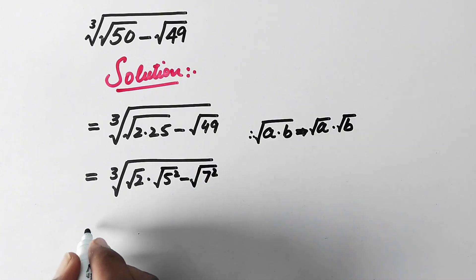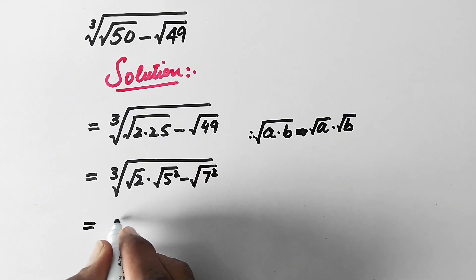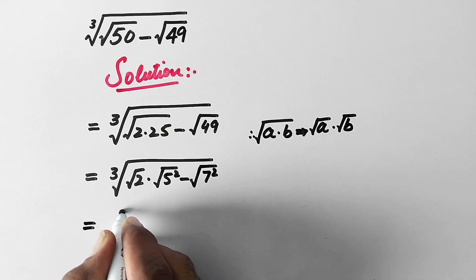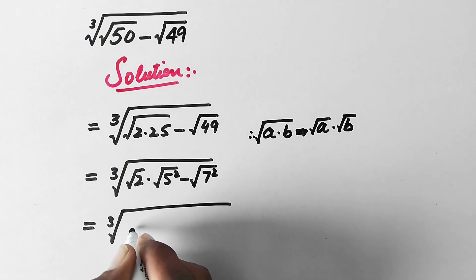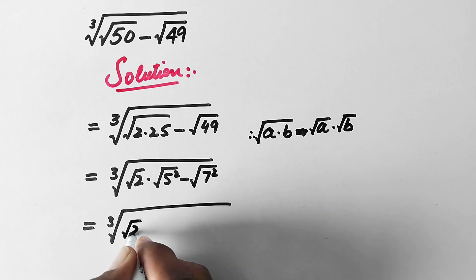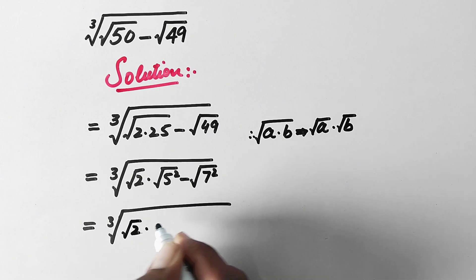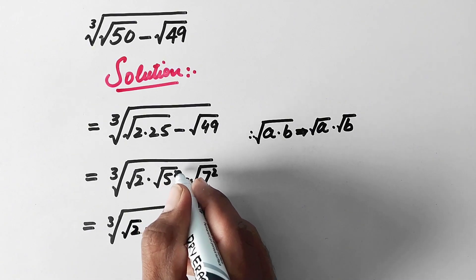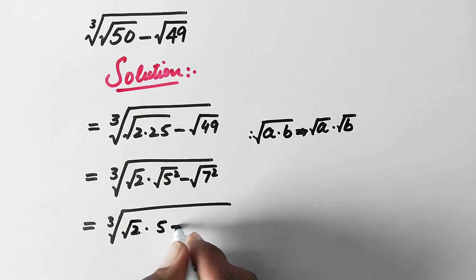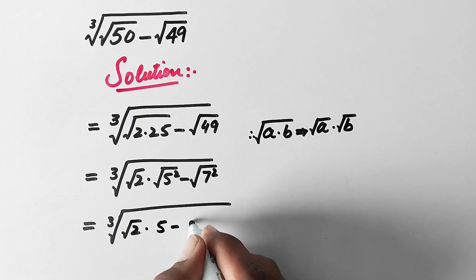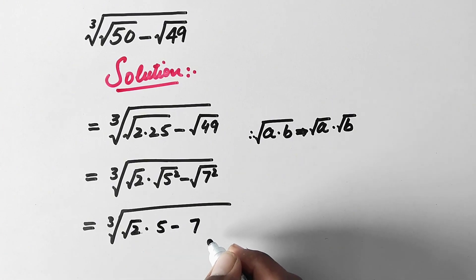So in the next step, we take the cube root of square root 2 times — the square root cancels the square — giving us 5 minus 7.